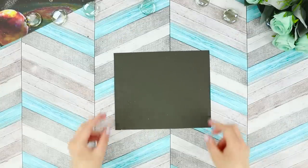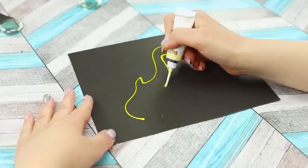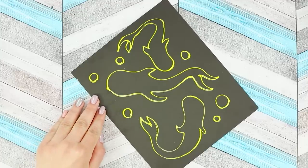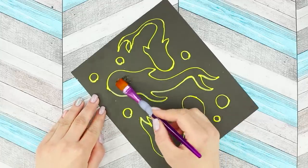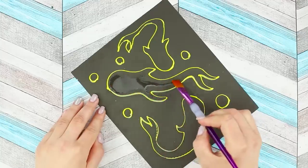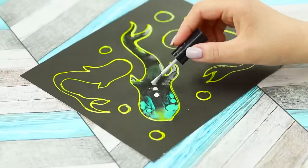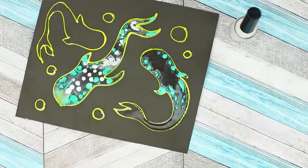For this idea, take a sheet of thick black paper and puffy paint. Draw the outlines of fish on paper using puffy paint. Next, add some bubbles. Now take a thick brush. Dip it in water and fill in the drawings. Next, take nail polish and add them to the water.